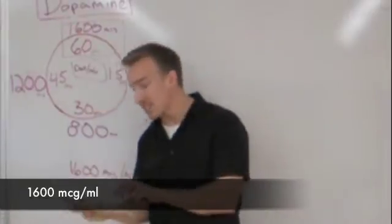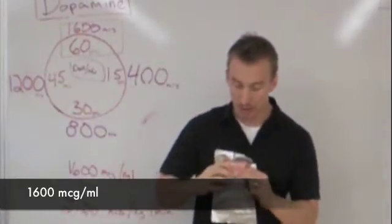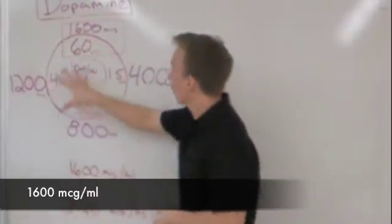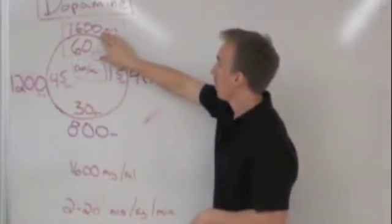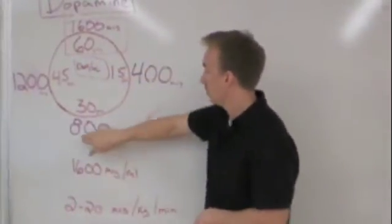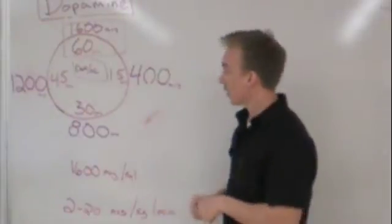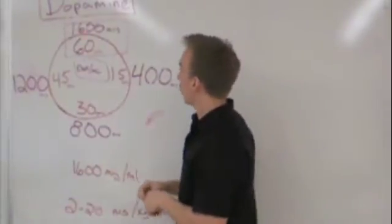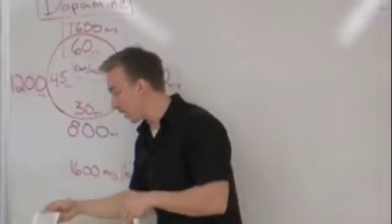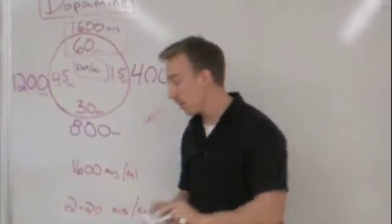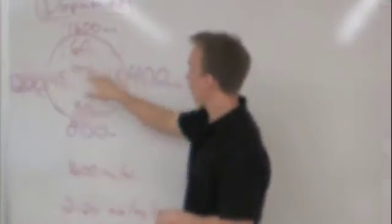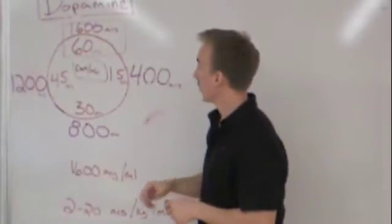Dopamine is packaged as 1,600 micrograms per milliliter. So at the top of the clock, we have 1,600 and we quarter that out around the clock. On the inside, we reference our drip set, which is 60 drops per milliliter. So 60, 15, 30, 45, you get the idea.